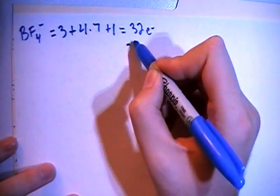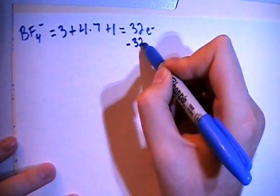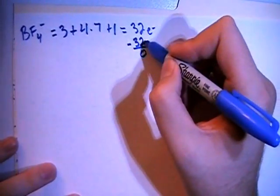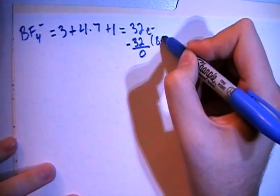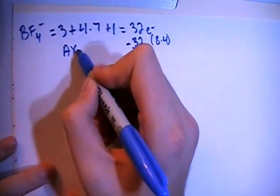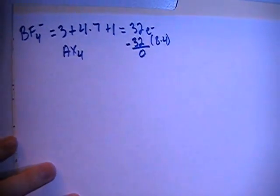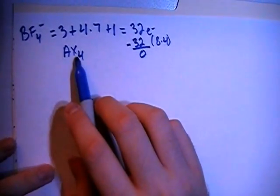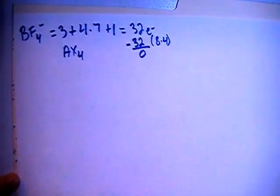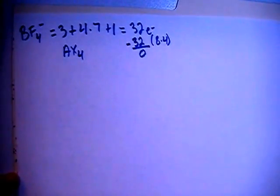We can now subtract out the largest multiple of eight which in this case is 32 leaving us with zero electrons remaining and since 32 is equal to eight times four that means that this will be an AX4 structure meaning that there is one central atom surrounded by four peripheral atoms and zero non-bonding pairs on the central atom.